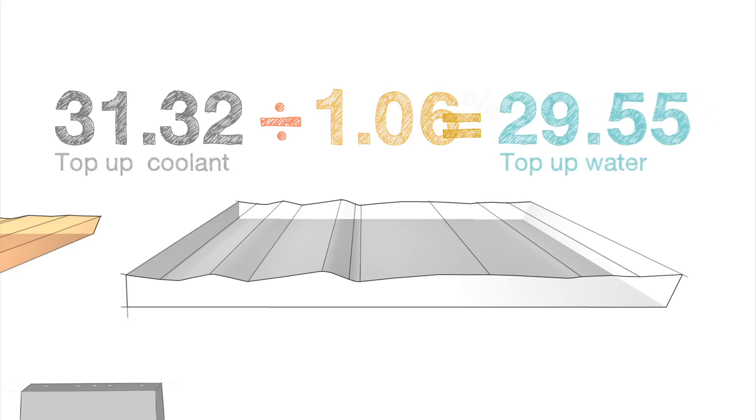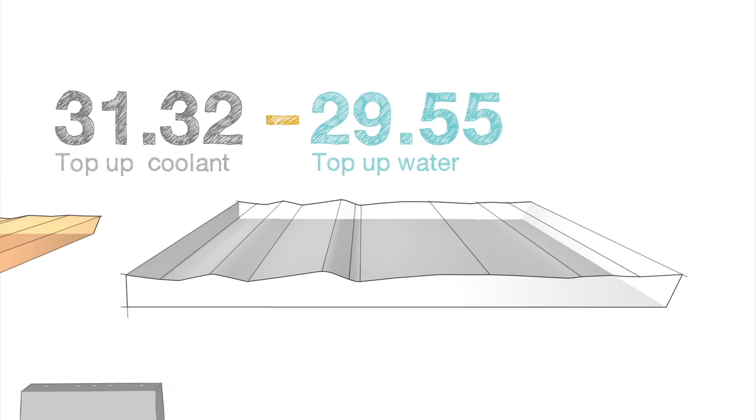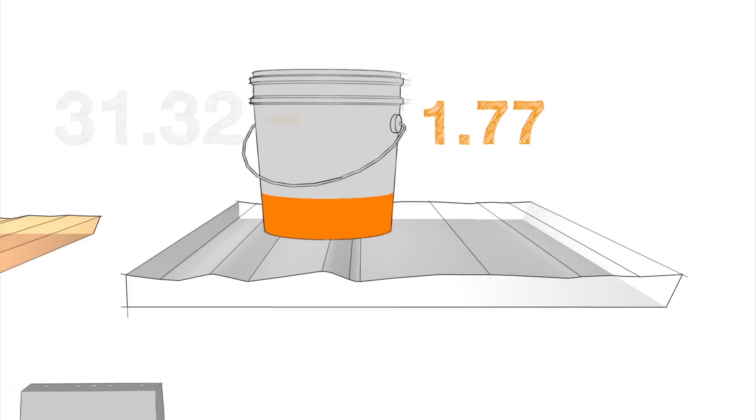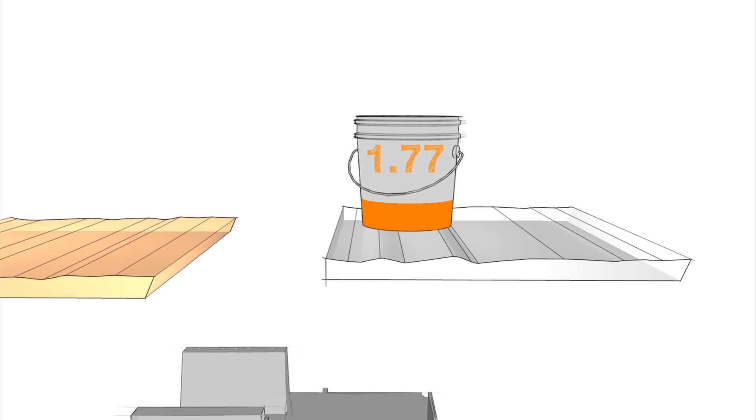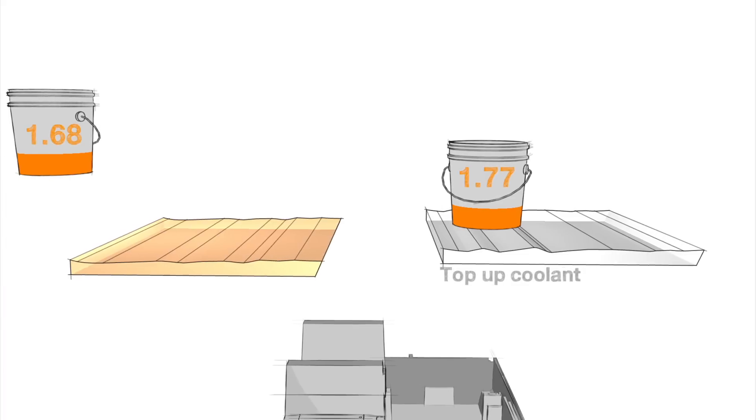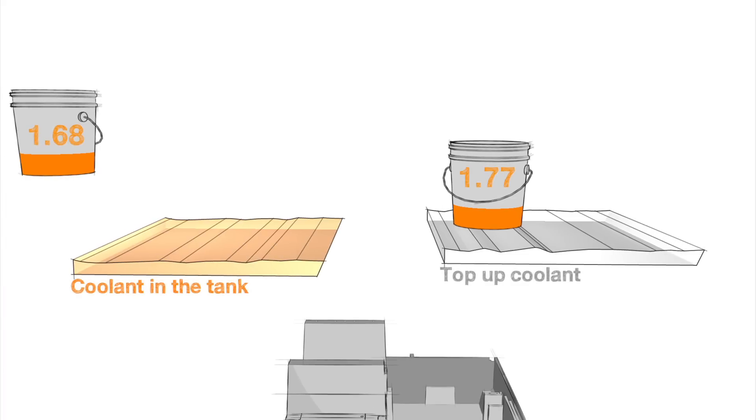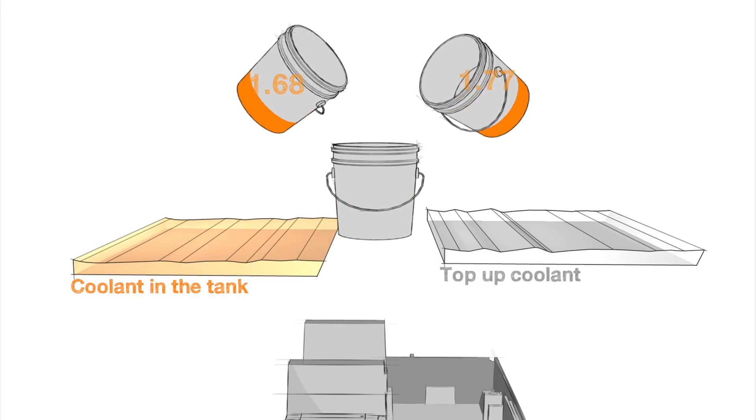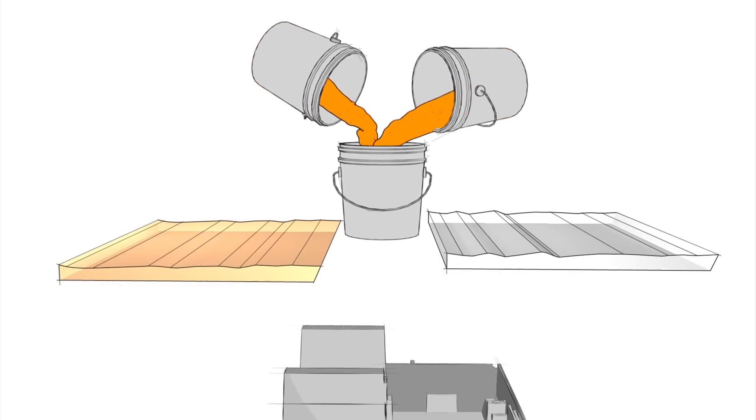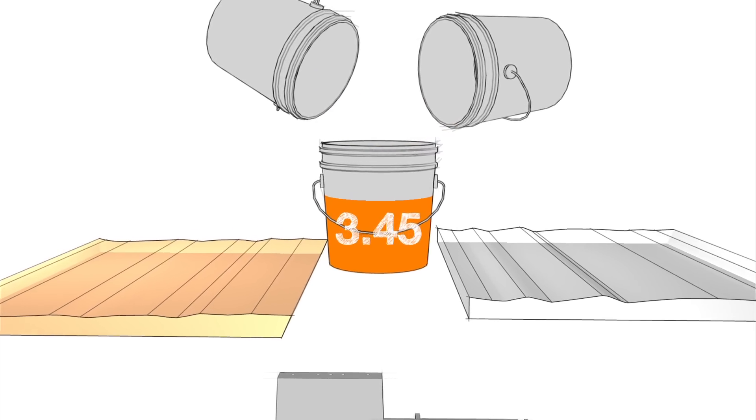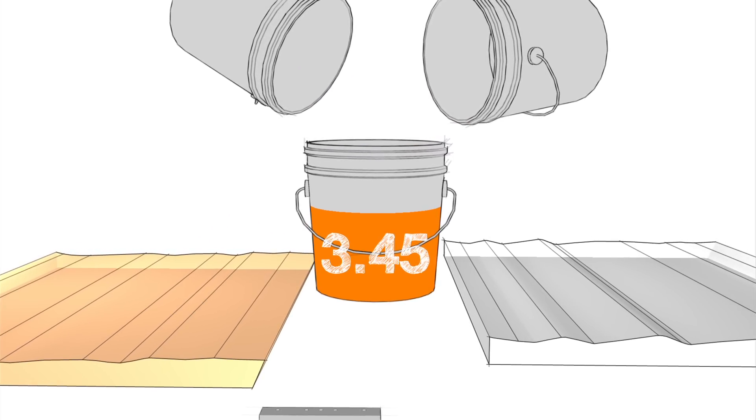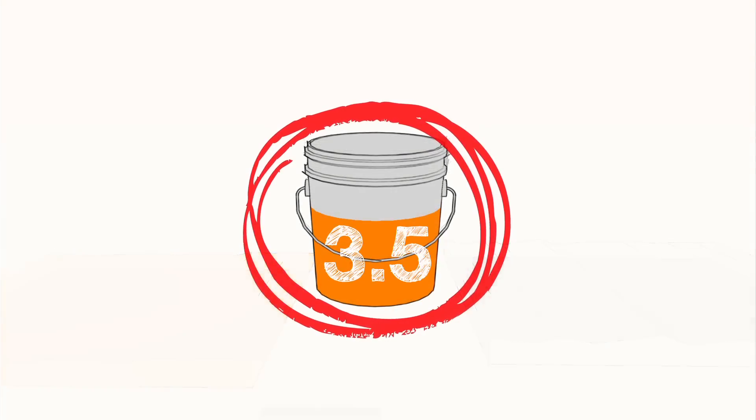Finally, we subtract 29.55 from 31.32 to find the 1.77 gallons of concentrate we needed. Now we know we need 1.77 gallons of concentrate for our top-up coolant and 1.68 gallons of concentrate to fix the coolant in the tank. So we add 1.68 to 1.77 to get 3.45 gallons of concentrate total. We round this number up to 3.5 gallons.